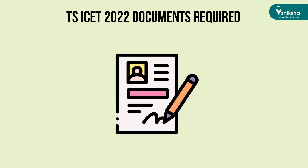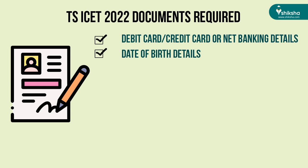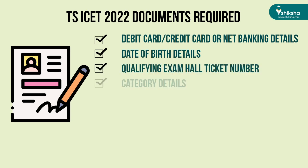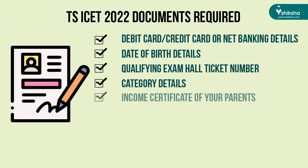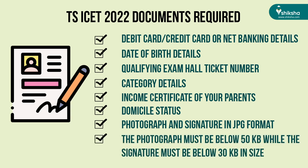Before proceeding to register, candidates must keep some details and documents handy for a seamless registration process. You need a debit card, credit card, or net banking details for online fee payment, along with your date of birth, qualifying exam hall ticket number, and category details. Additionally, you must also know the income of your parents and your domicile status. You also need a photograph and signature in JPG format.